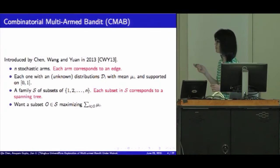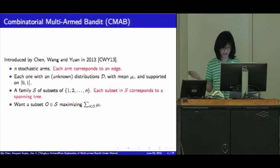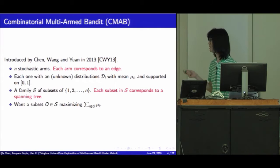This is a special case of the general formulation, combinatorial multi-armed bandit. It's introduced by Chen, Wang, and Yuan back in 2013. There are n stochastic arms, each one with an unknown distribution. In this case, it's just an edge. And there's a family S of subsets. In the last example, it's just the family of all spanning trees. And we want a subset which maximizes the sum of utilities.